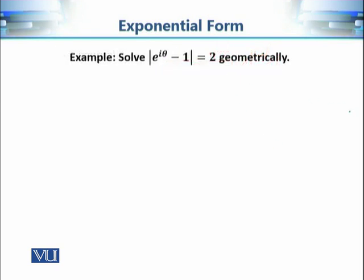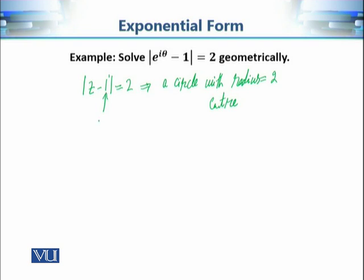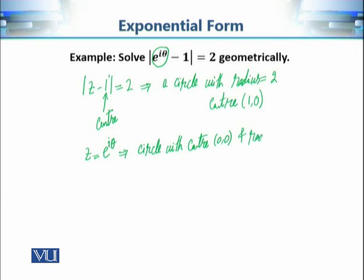Now let's use our knowledge of exponential form to solve an equation. If we are given modulus of (z minus 1) equals 2, this represents a circle with center (1, 0) and radius 2. We also know that if z equals e raised to power iota theta, that corresponds to a circle with center (0, 0) and radius 1. So to solve the equation geometrically, we need to find the intersection of these two circles.